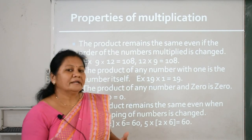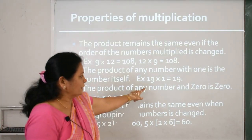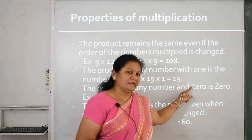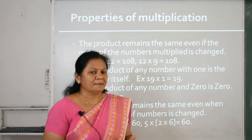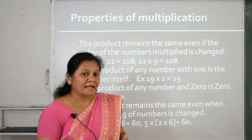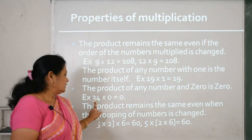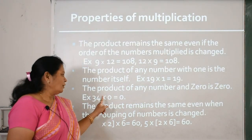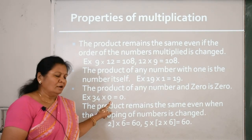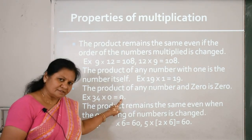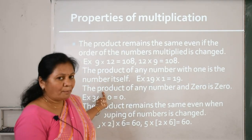Third property: the product of any number and 0 is 0. This means if you multiply any number by 0, the answer is 0. For example, 34 multiplied by 0 — the answer is 0.